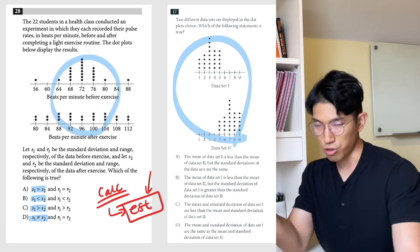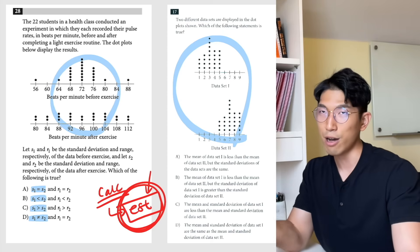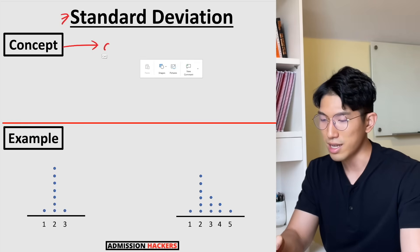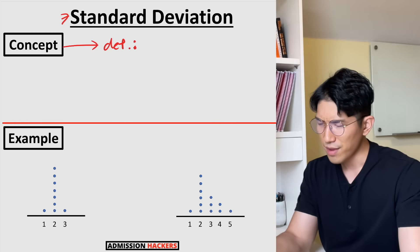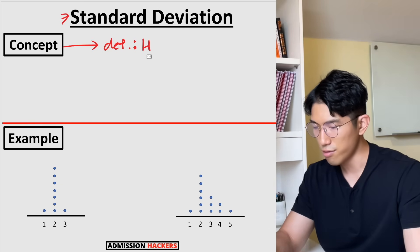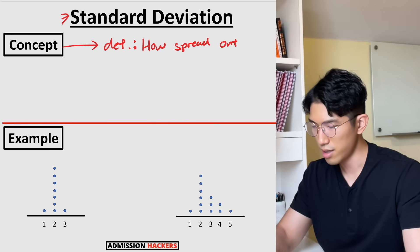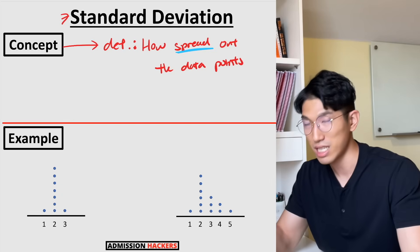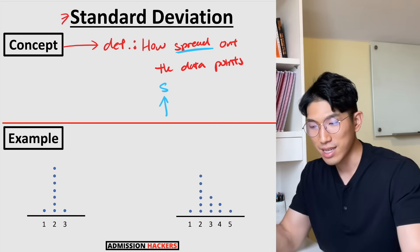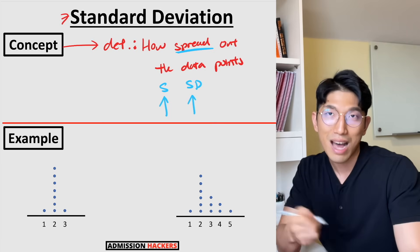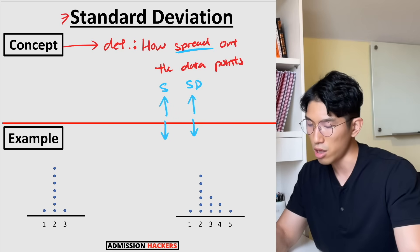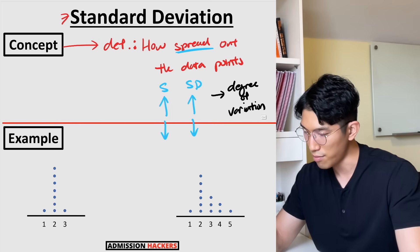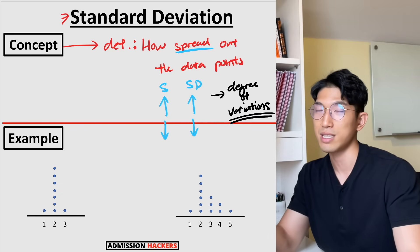All you need to know on the SAT is how to estimate standard deviation. It's all about understanding the concept — more importantly, the definition. Standard deviation is simply referring to how spread out the data points are. That is what standard deviation is — it depends on how much the data is spread out. If it's spread out a lot, your standard deviation is going to be very high. If it's not very spread out, your standard deviation is going to be low. It's essentially referring to the degree of variation in your data points.